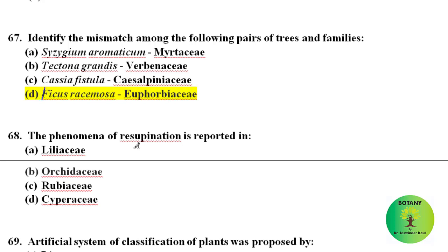The phenomenon of resupination is reported in which family? In resupination, the flower stalk does a 180-degree twist while it develops, so what was the bottom part becomes the top part. This phenomenon is present in family Orchidaceae.